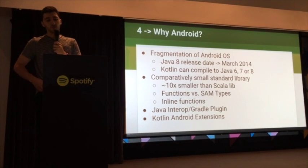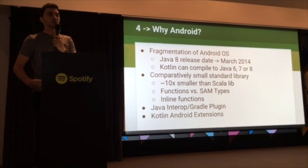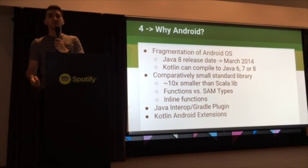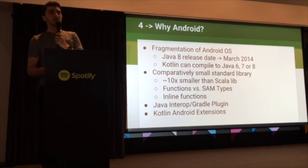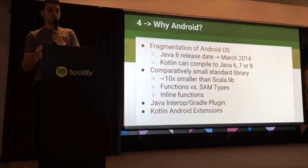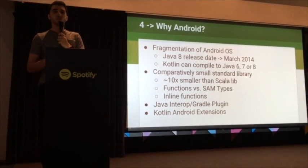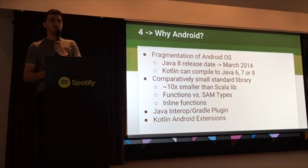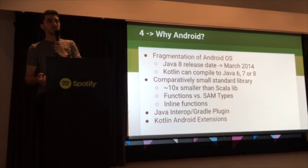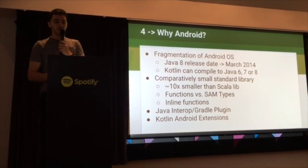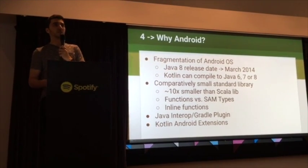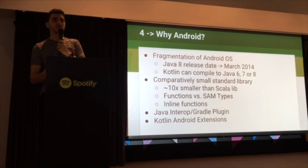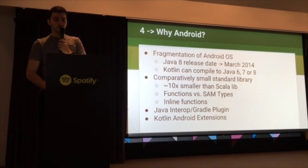Why is Android being targeted so heavily for Kotlin? The primary reason is that because of Android OS fragmentation, the Android community has to wait a long time before we can adopt the latest Java features. Java 8 was released over two years ago and only in the coming months is it being fully or partially supported. Whereas Kotlin can compile back down to Java 6, meaning you can use all the language features on any version of Android, even back to the first version.